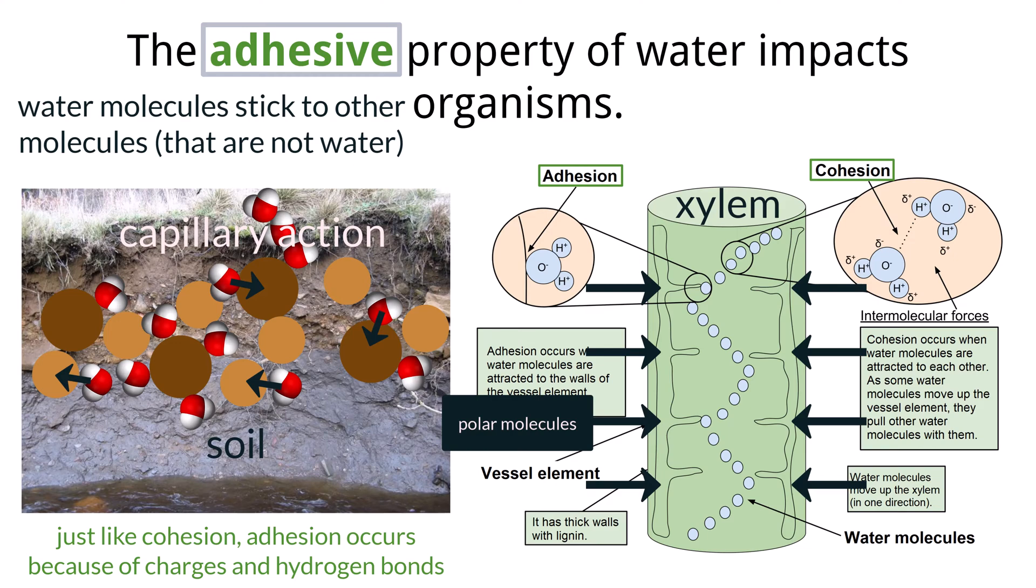This pull and attraction from the water molecules to the xylem wall helps create tension that supports the upward movement against gravity, very similar to what happens in the soil.